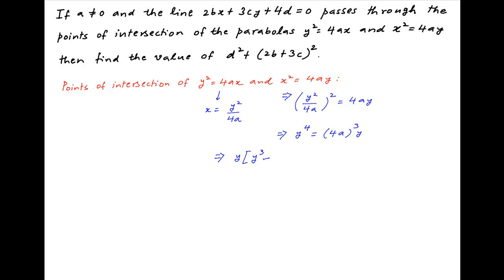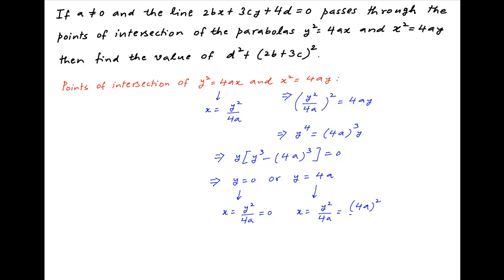Moving all terms to the left-hand side and taking y common, we get y(y³ − 4a³) = 0, which implies that y = 0 or y = 4a. In the first case, x = y²/4a = 0, and in the second case, x = (4a)²/4a = 4a. Therefore the two points of intersection of the two parabolas are (0, 0), denoted A, and (4a, 4a), denoted B.